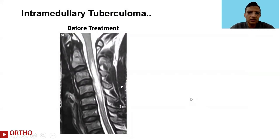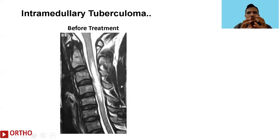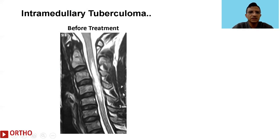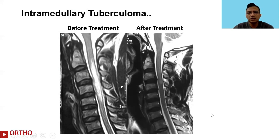We also want to look for spinal cord changes or the presence of intramedullary tuberculoma. We are focusing primarily on tuberculosis as it is the most common spinal infection we encounter, though other infections exist. Here is a patient who had an intramedullary tuberculoma; before treatment and after treatment with steroids and anti-tuberculous therapy, we had a satisfactory outcome.